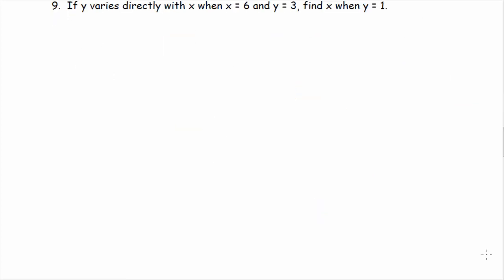Problem nine. If y varies directly with x, notice that vocabulary. That means direct variation. When x is six, y is three. Find x when y is one. So, we go back to our original definition of direct variation, which is y equals kx. It's always in that form. Now, we fill in what we know. We know that x is six and y is three. So, three equals k times six. We solve for k by dividing by six, and we get k equals three over six, which reduces to one-half.